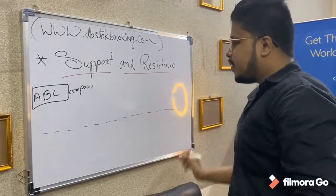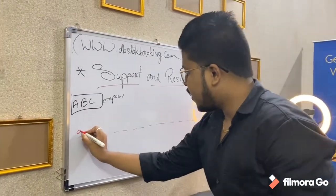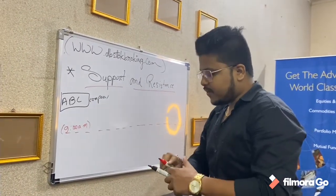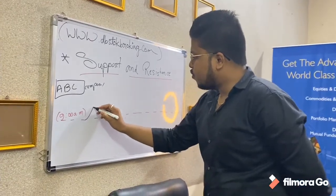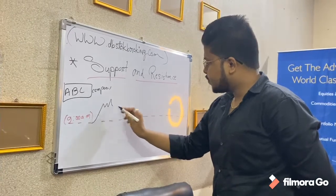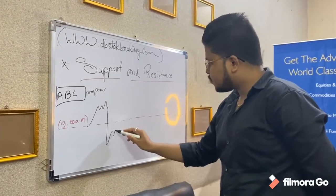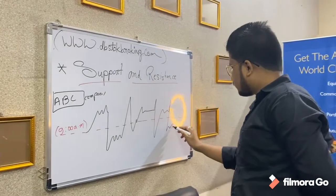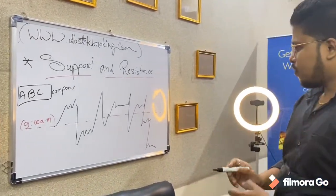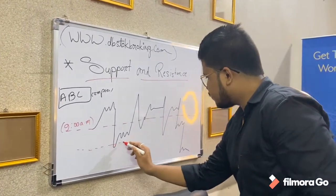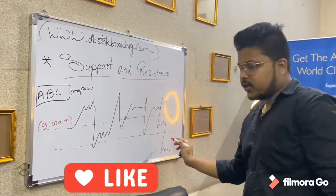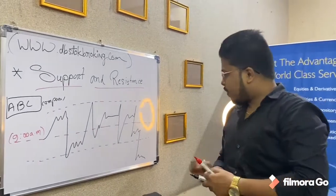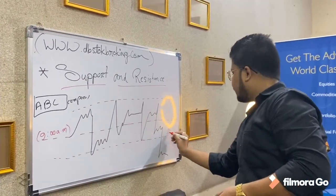Now, this is a normal line. Suppose at 9 a.m. the market opens. At this level the graph goes up, then down, up, down. There will be another line in the lower region and also an upper line. This will be like around at 3:30 p.m. the market closes.